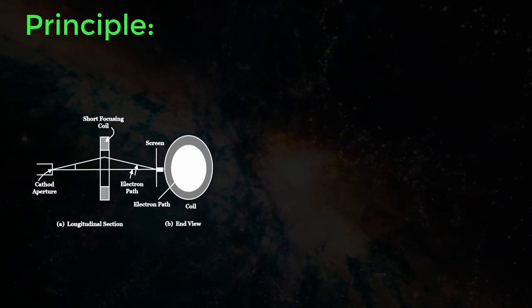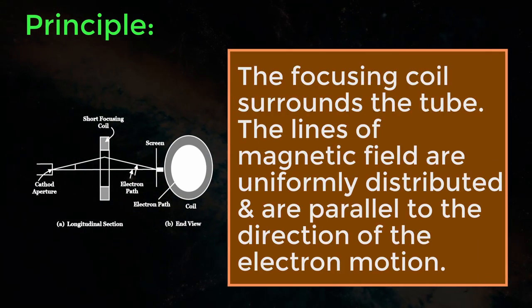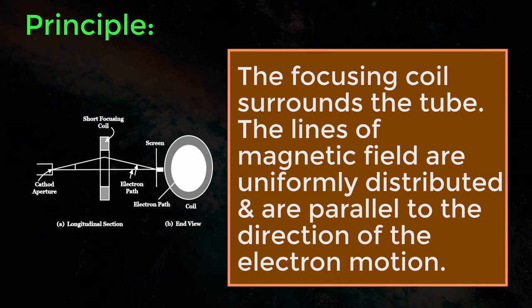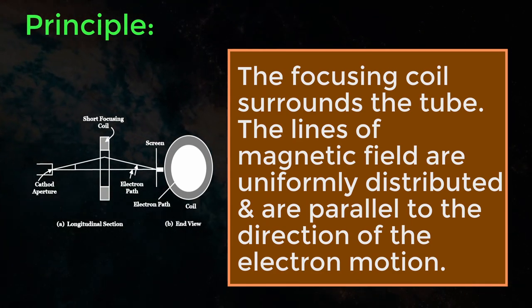The principle of Magnetic Focusing is shown here. The focusing coil surrounds the tube. The lines of magnetic field are uniformly distributed and are parallel to the direction of the electron motion.